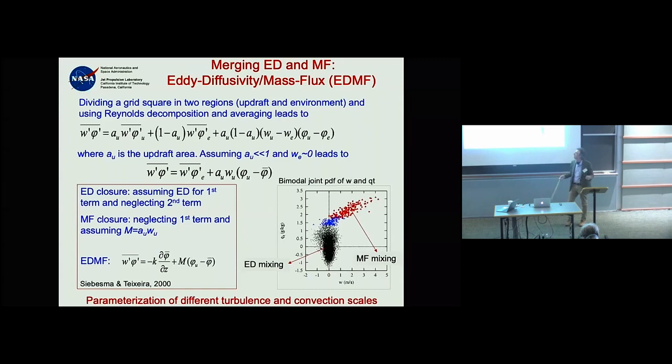In terms of the mass flux formulation, you come up with a model of these plume regions. Integrating over the plume areas, assuming steady state and neglecting some sources and sinks, gives a relatively simple system of equations.